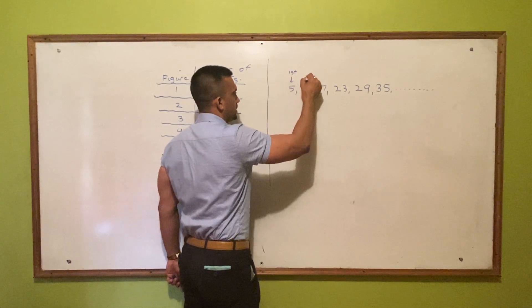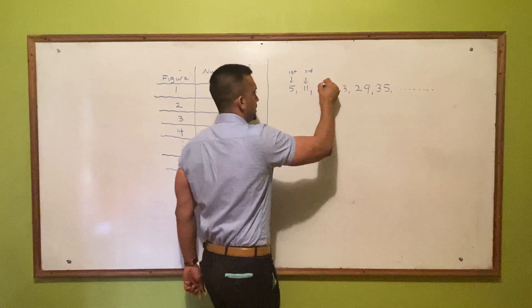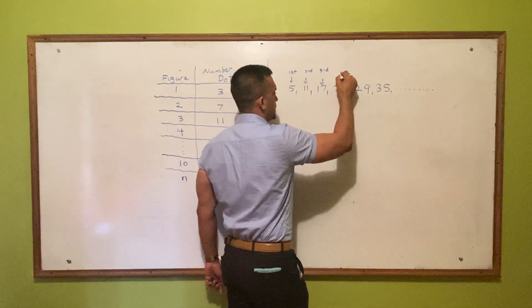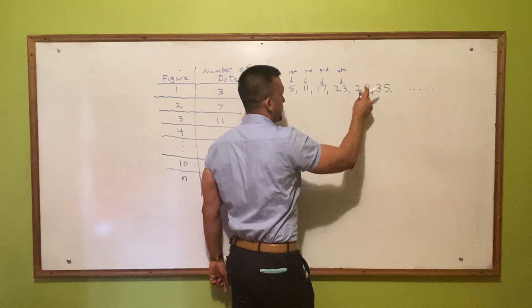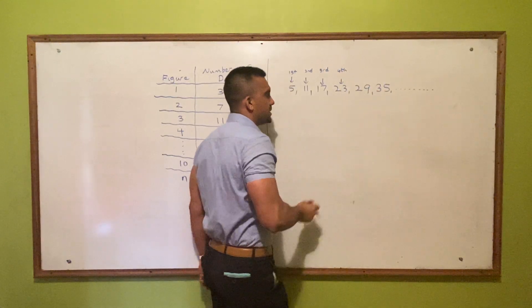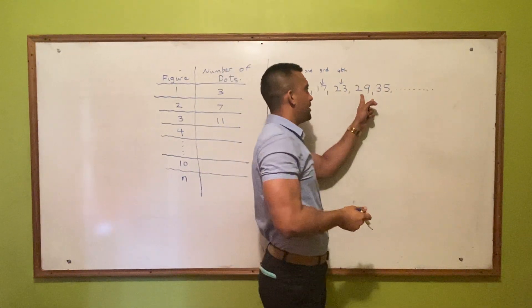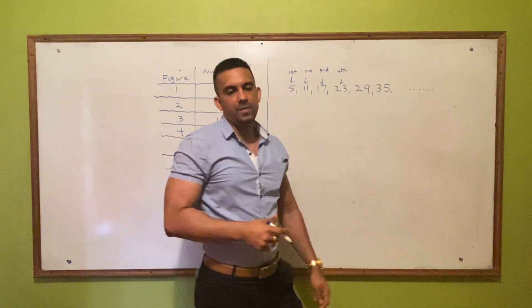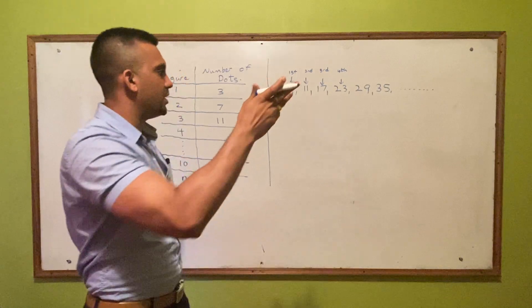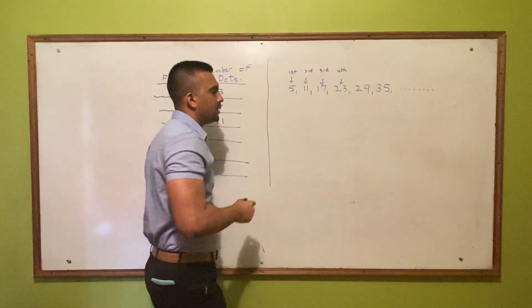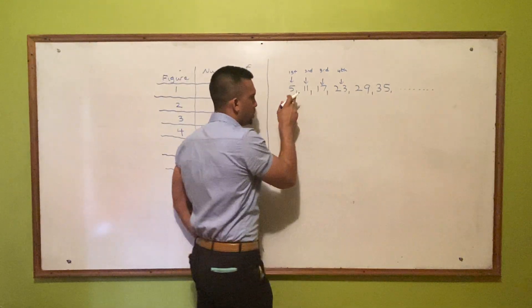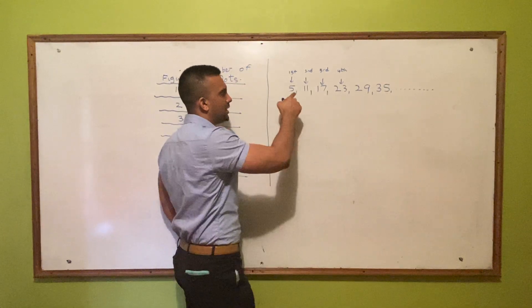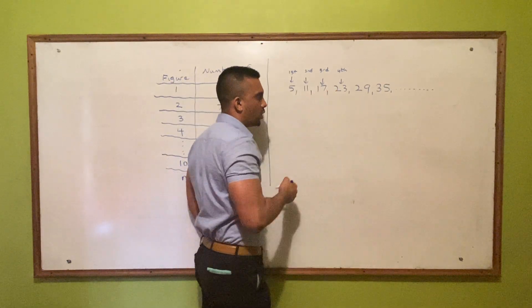The second term is 11, the third term is 17, the fourth term is 23, the fifth term is 29, and the sixth term is 35. Any time that you want to find out a specific term in a sequence where the sequence increases by a fixed amount,